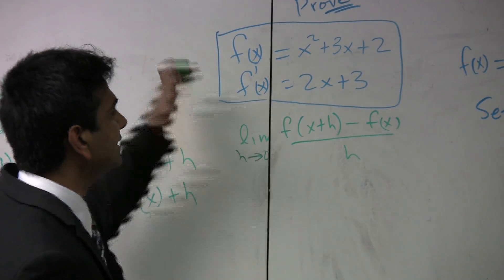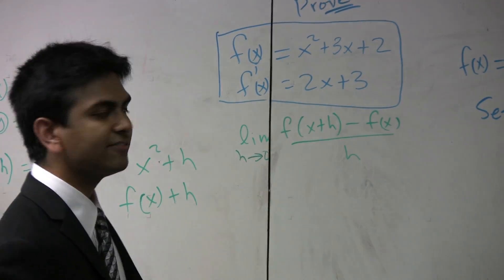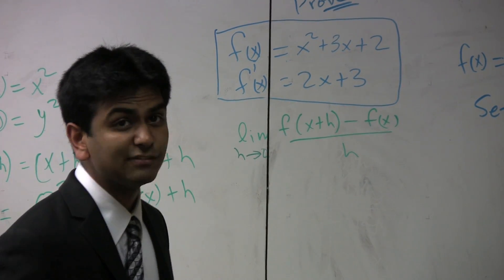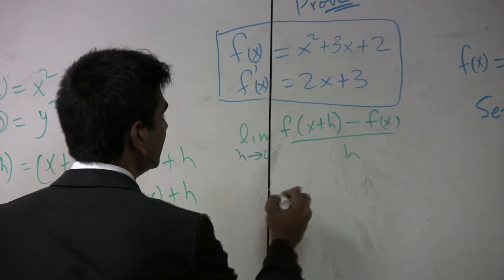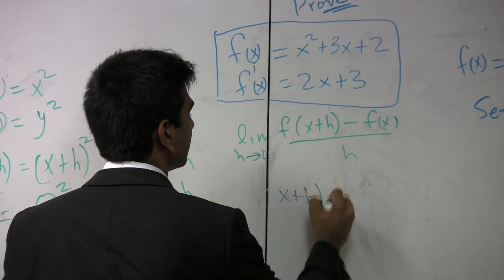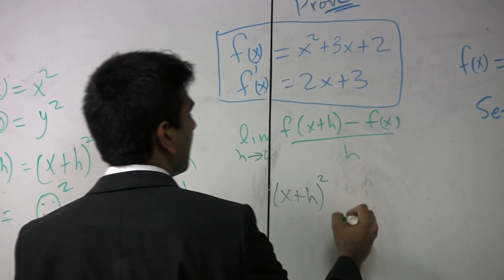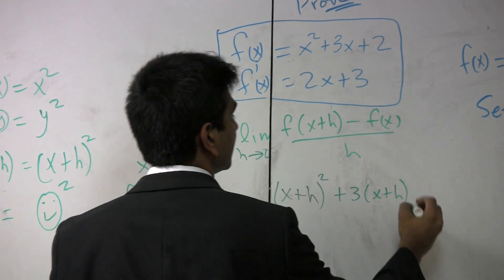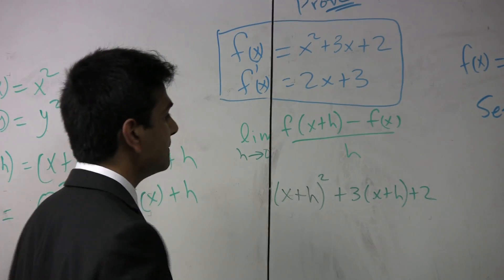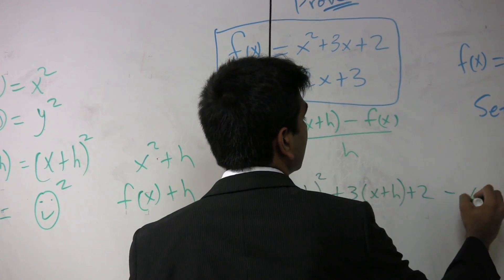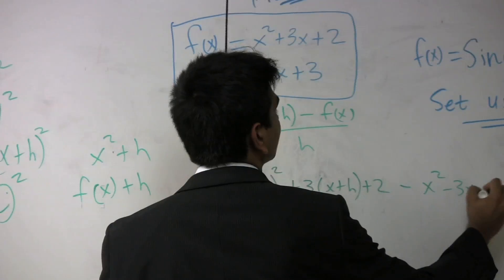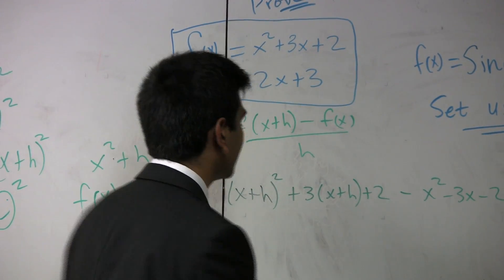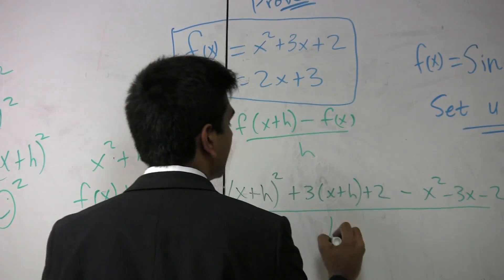So, using that in this context, what is f of x plus h? Remember, just plug in x plus h everywhere you see an x. So, that will be x plus h squared plus 3x plus h plus 2 minus x squared minus 3x minus 2. Notice how I distributed out the negative sign? This divided by h.